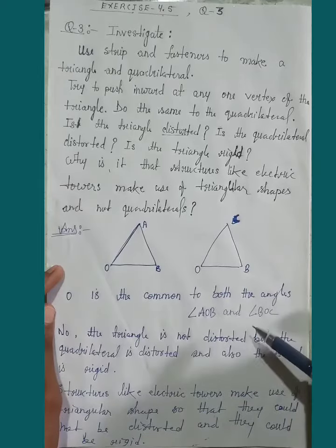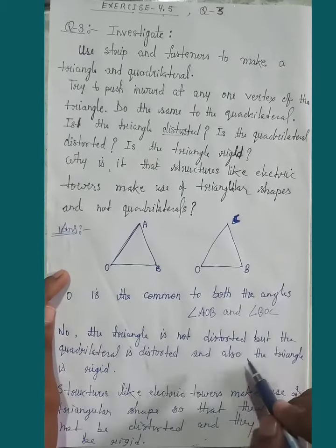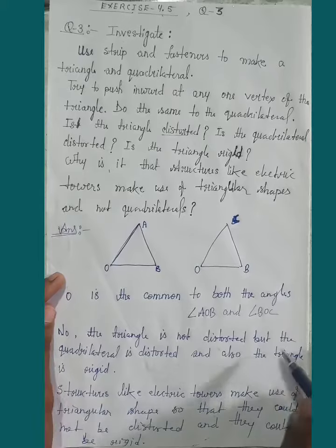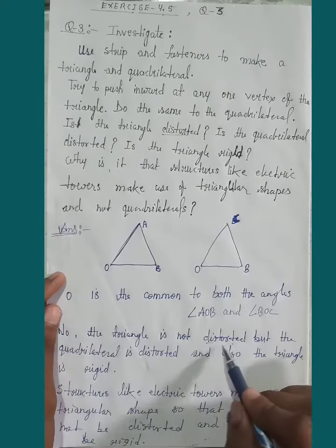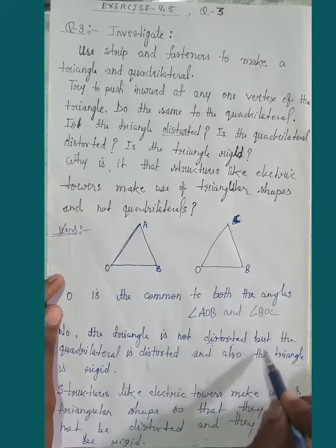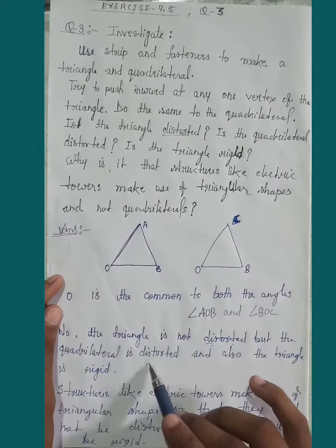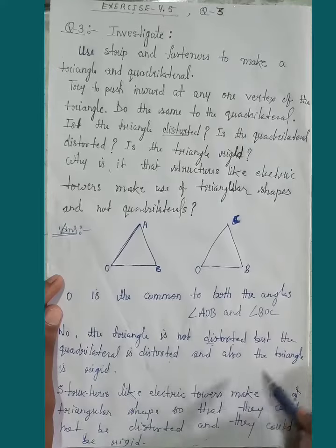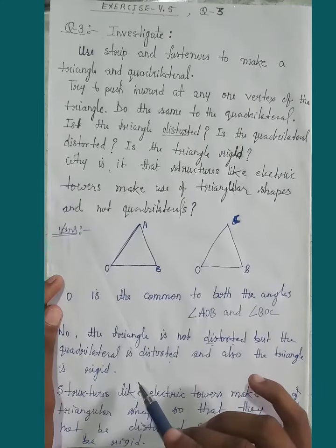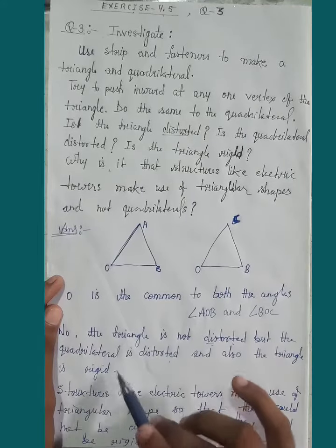No, the triangle is not distorted. The triangle is not distorted. Distortion is not necessary. The triangle resists change and is not distorted.